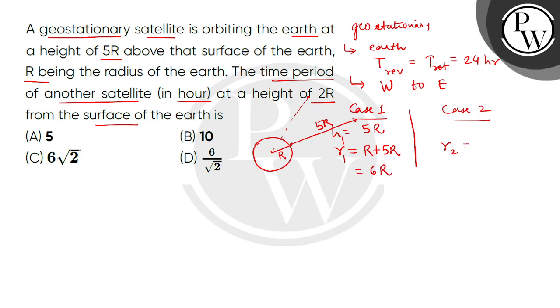Now in the second case, we have R2 equals 2R plus R. Because the satellite is at 2R height above the earth's surface, so this will be a total orbital radius of 3R.